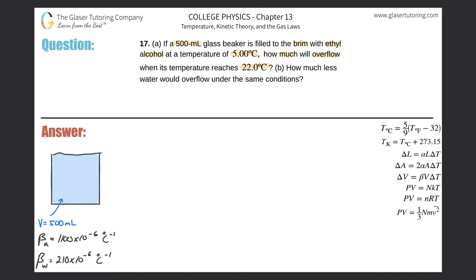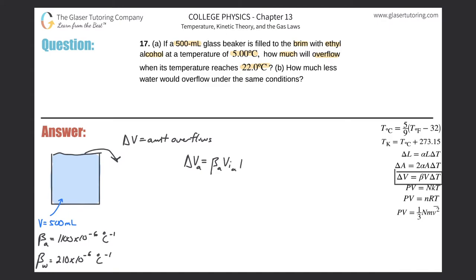Since it's filled to the top, whatever volume this expands by is going to directly overflow. So I'm finding the change in volume, which equals the amount that overflows. The change in volume of a liquid — in this case alcohol — equals the thermal coefficient of volume expansion β multiplied by the initial volume V₀, multiplied by the change in temperature ΔT. Remember, ΔT is always final minus initial.